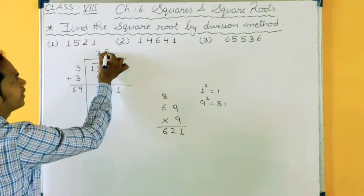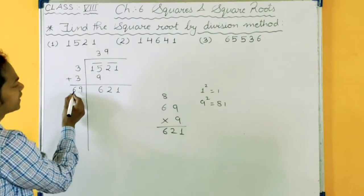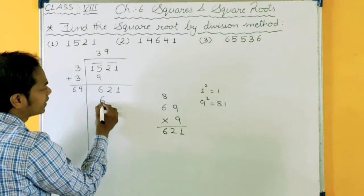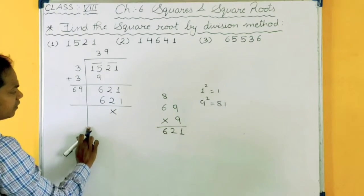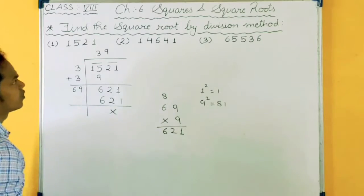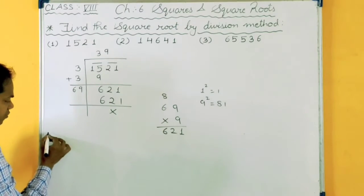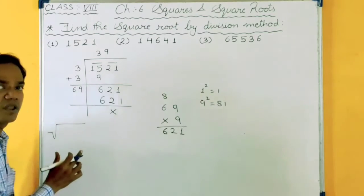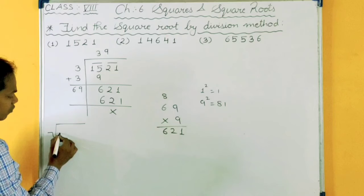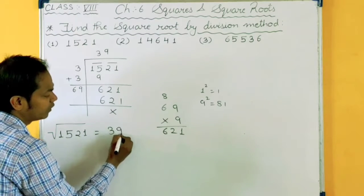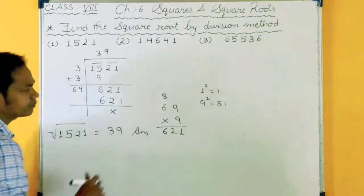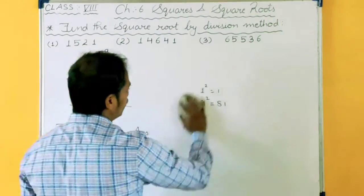So 9 if I have taken here, 9 I will take here also. So 69 times 9 is 621. Now this is reduced to 0. It's completed. So finally we will write, square root of 1521 is equal to 39. This is your solution.